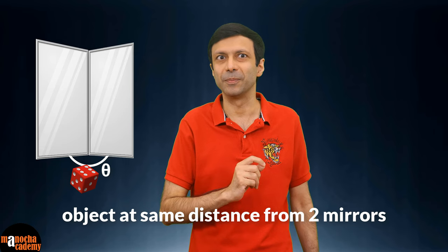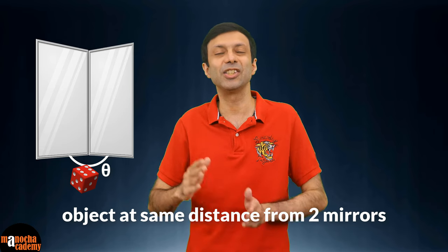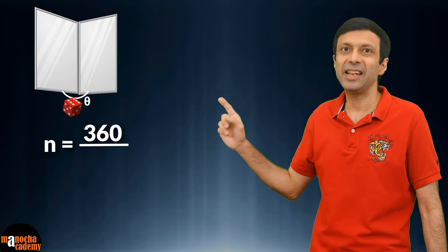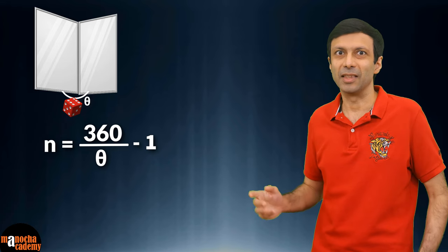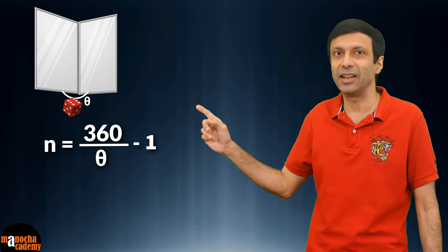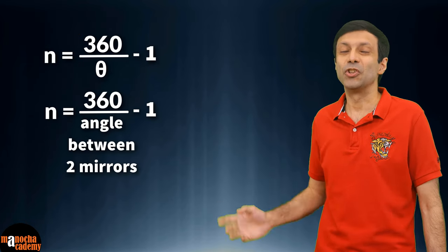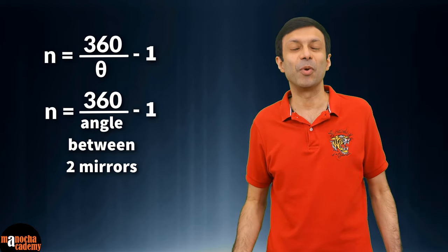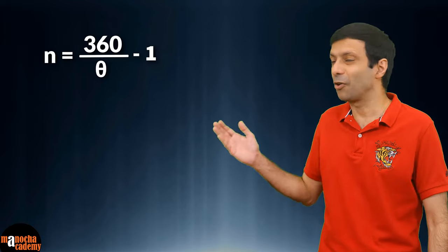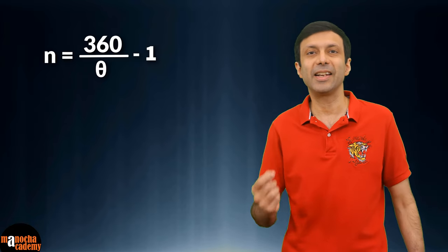There is a formula that will help us predict the number of images for two inclined mirrors. If the two mirrors are placed at an angle theta and the object is placed symmetrically between the two mirrors — that is, at the same distance from both mirrors — then the number of images n equals 360 divided by theta minus 1. So the number of images is 360 degrees divided by the angle between the two mirrors, minus 1.